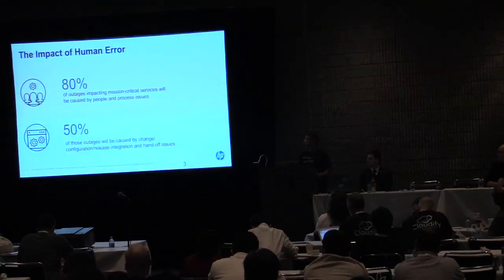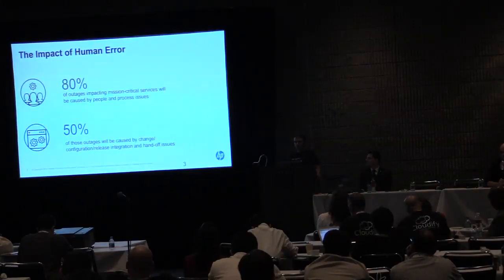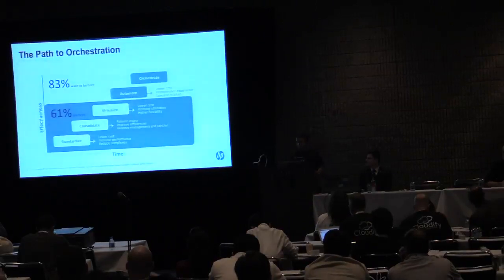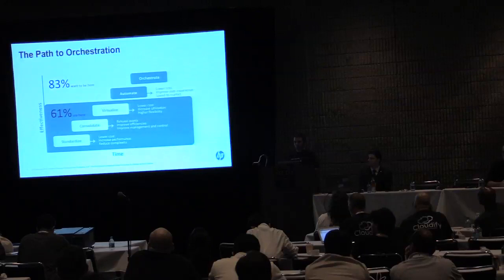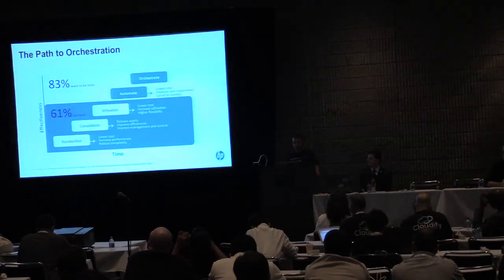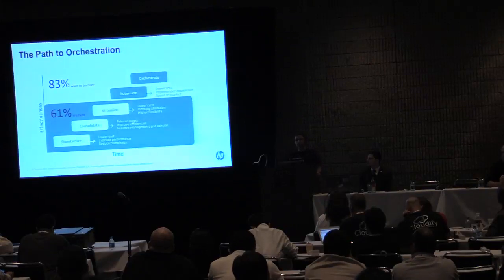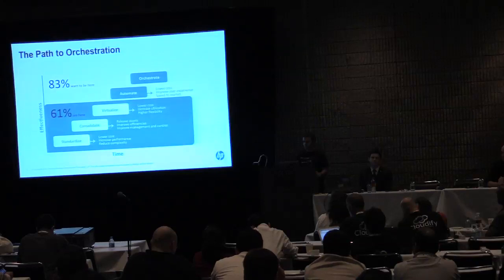Looking at what's happening in real life: a Gartner study conducted last year shows that about 80% of outages impacting mission-critical applications come from human errors — people making mistakes. Of those errors, 50% were caused by people applying changes in an unstructured or unordered way. Additionally, about 60% of organizations are only beginning to realize the benefits of virtualization and are not even into cloud yet. Some do automation at a more basic level using Chef or Puppet, but 83% are still not at complete orchestration. That's where Cloudify comes in.